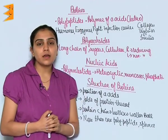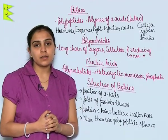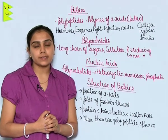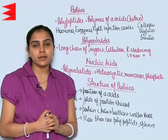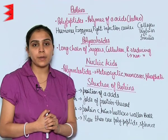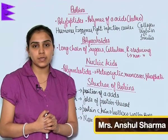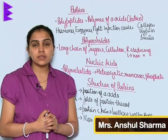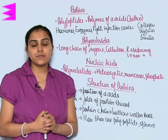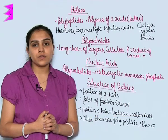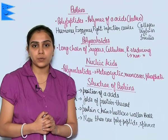Proteins are polypeptides. These are polymers of amino acids. Amino acids are linearly linked through peptide bonds and thus they give rise to proteins. These are usually heteropolymers — that is, different kinds of amino acids are linked together to form proteins.